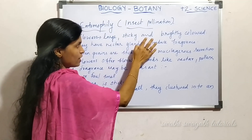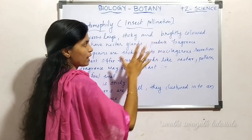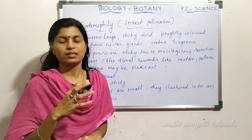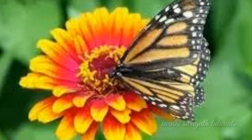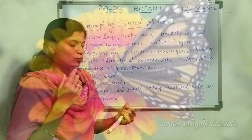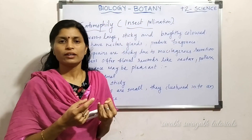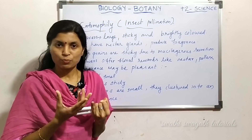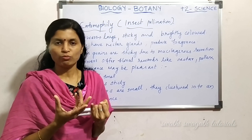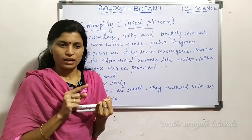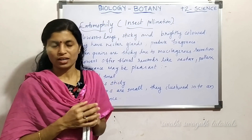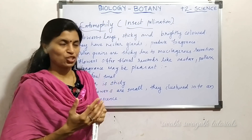Entomophilous flowers are sticky and brightly colored — large size, colorful flowers — for attracting pollinating agents. They also produce fragrance, that is a pleasant smell.